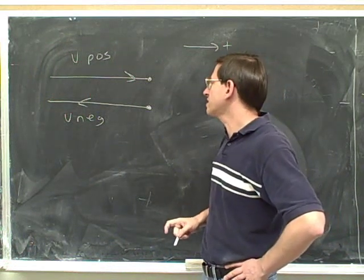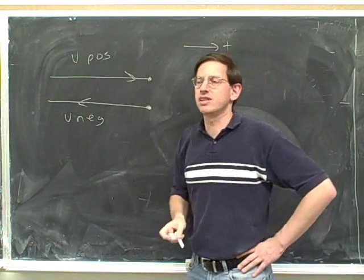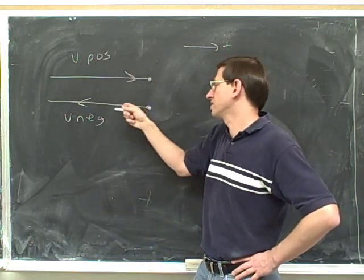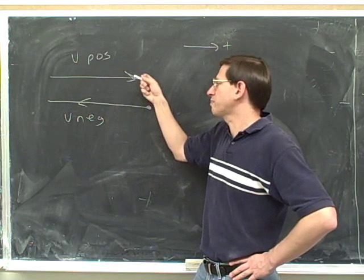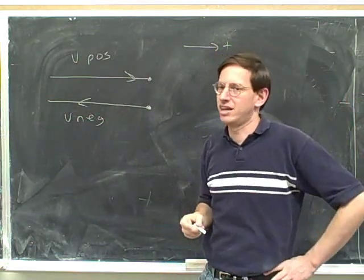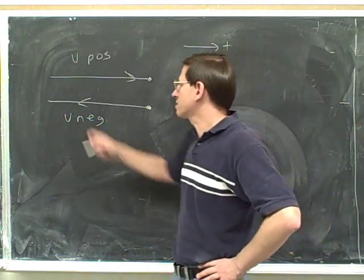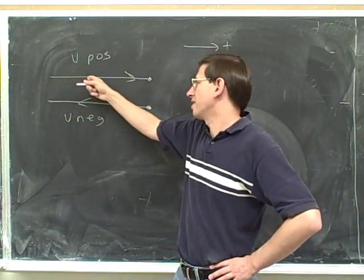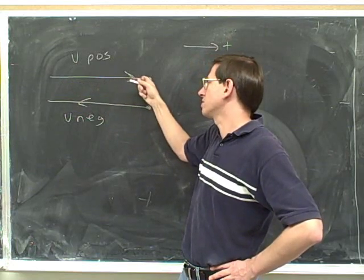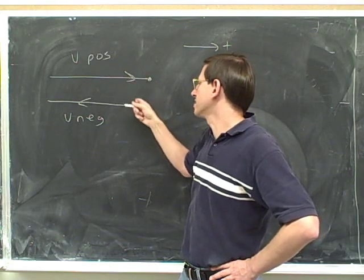What's the velocity going to be at the instant where we transition between moving to the right and moving to the left? Well, if the velocity is positive here and we're transitioning to negative velocity, we have to pass through zero — the velocity can't just jump from positive to negative. What's happening is we're moving to the right but slowing down, going slower and slower until for an instant our velocity is zero, and then we start moving to the left.